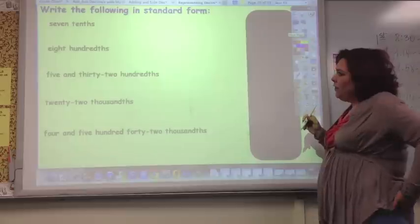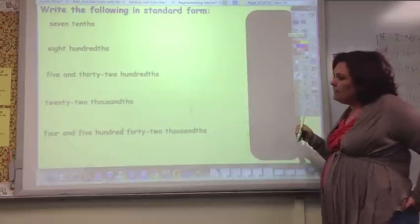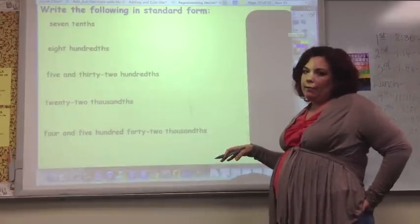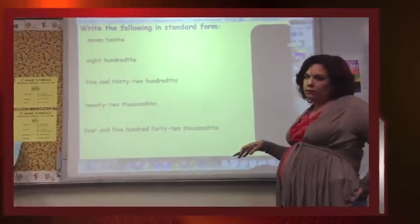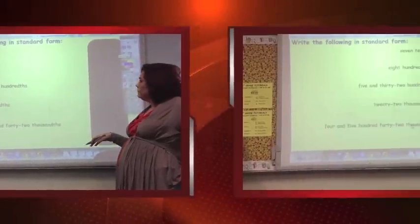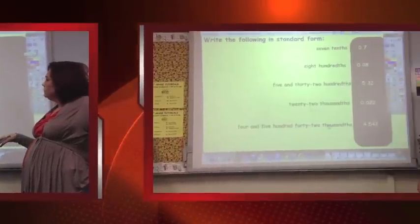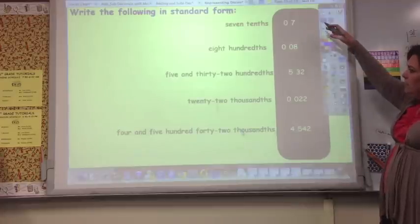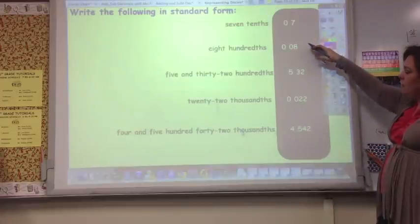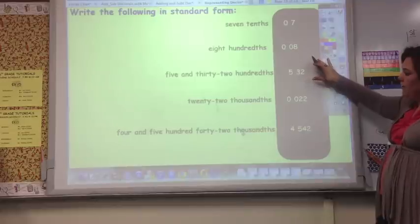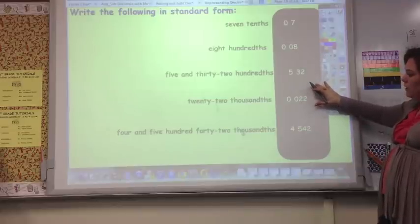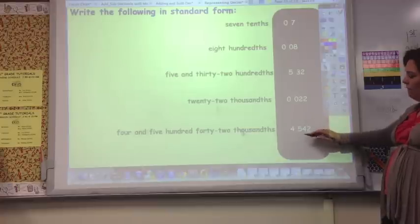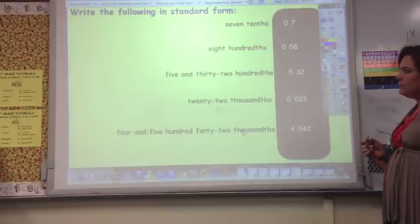Go ahead and write these numbers out in standard form. The answers are: 7 tenths, 8 hundredths, 5 and 32 hundredths, 22 thousandths, and 4 and 542 thousandths.